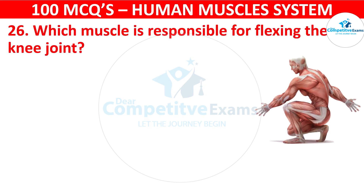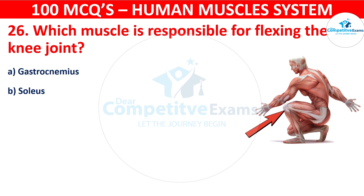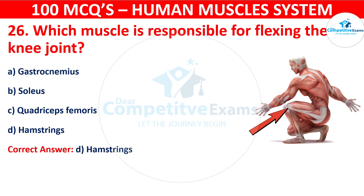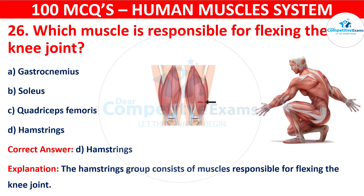Which muscle is responsible for flexing the knee joint? Your options are: Gastrocnemius, Soleus, Quadriceps femoris, or Hamstrings. The correct answer is D, i.e. Hamstrings. The hamstrings is the group of muscles responsible for flexing the knee joint.